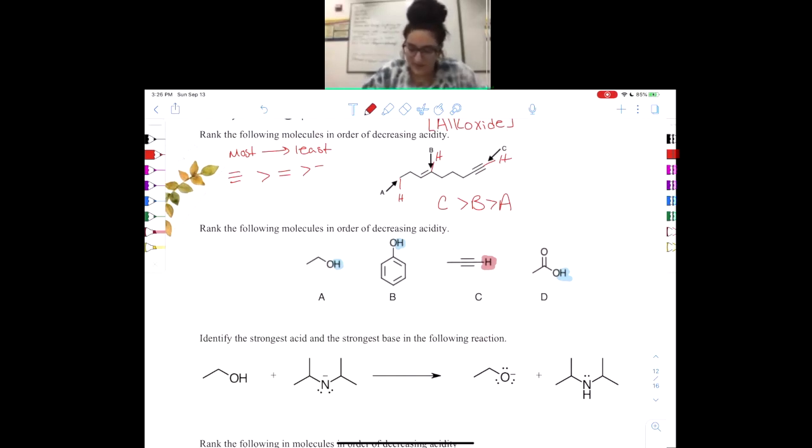And then between A, B, and D, we can go on to look for resonance. Between these three answer choices, one of them does not have any resonance whatsoever, and that would be A. So A is going to be the second least acidic. And I will write down the order at the end, but I just want you to think about it for a second.